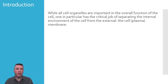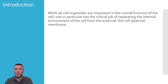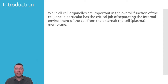Prioritizing cell parts by importance would be a difficult task. After all, because each cell part has a responsibility or set of responsibilities, lacking any given part would mean that those responsibilities are not accomplished. But there is one cell part that has a particularly critical role because it establishes the boundary between the external environment and the internal: the cell membrane.